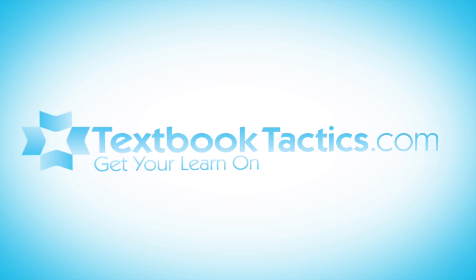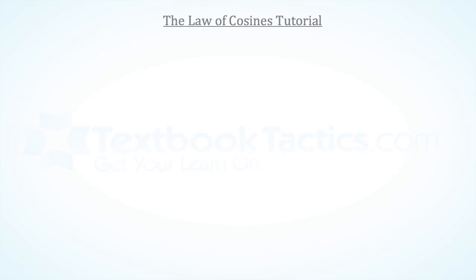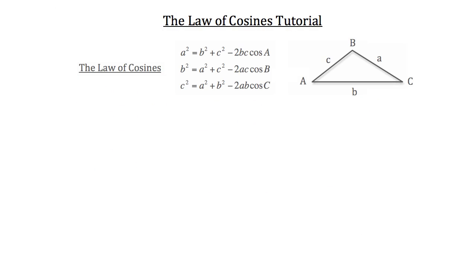This is the Law of Cosines tutorial. The Law of Cosines can be used to help you solve for a missing angle or side of any triangle. Our angles are going to be denoted in capital letters, and our side lengths are going to be denoted in lowercase letters. Our side lengths are always directly opposite their angle. Now here are the three basic forms of the Law of Cosines.